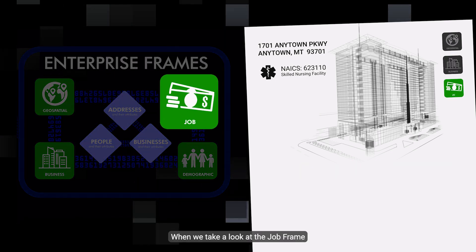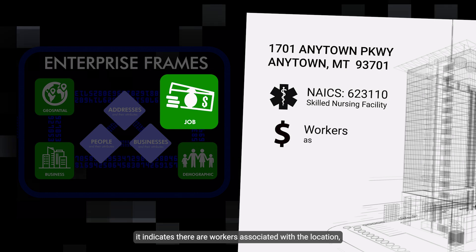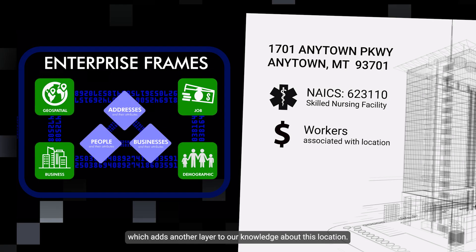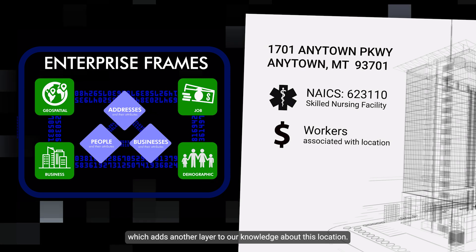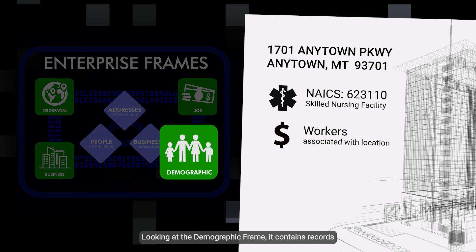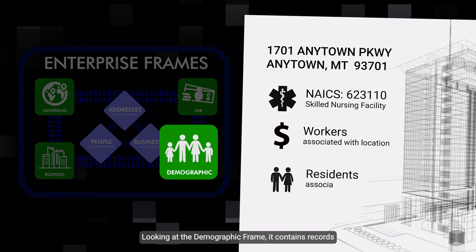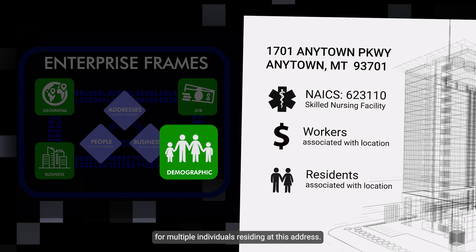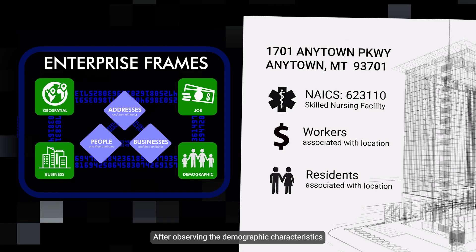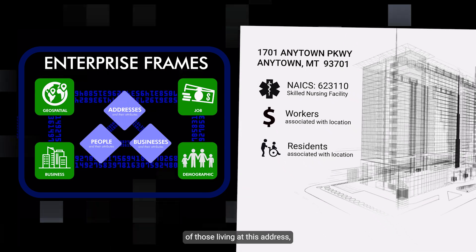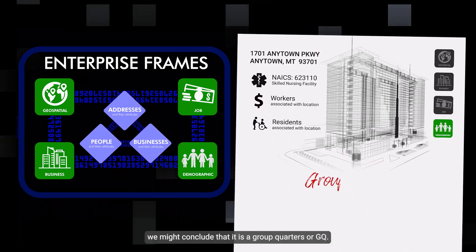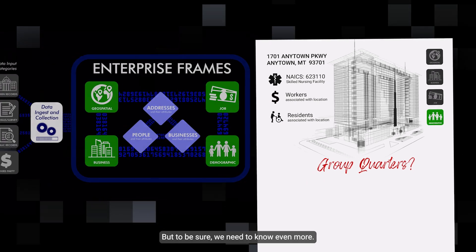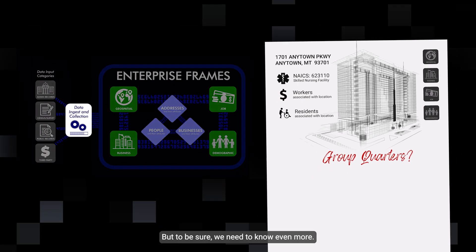When we take a look at the job frame, it indicates there are workers associated with the location, which adds another layer to our knowledge about this location. Looking at the demographic frame, it contains records for multiple individuals residing at this address. After observing the demographic characteristics of those living at this address, we might conclude that it is a group quarters, or GQ. But to be sure, we need to know even more.